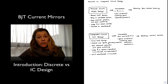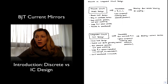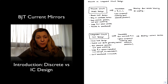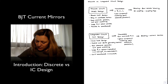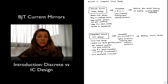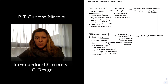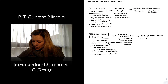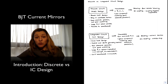For coupling of signals, in discrete design we have been using coupling as well as bypass capacitors, which have fairly large values in the range of microfarads. In the case of integrated circuits, if we ever need to do AC coupling, it is typically going to be performed outside the chip, because inside the chip we do not want to have capacitors with those large values.